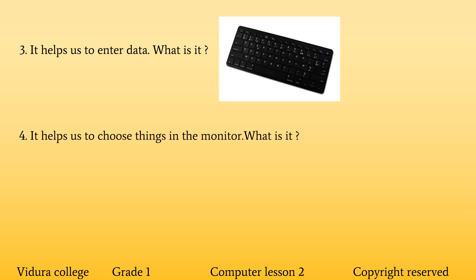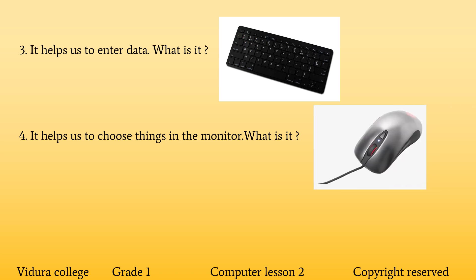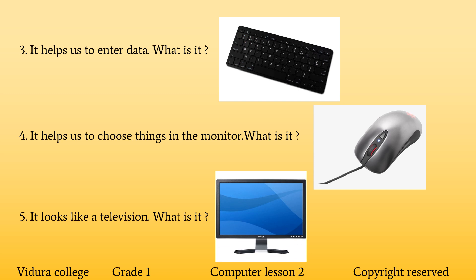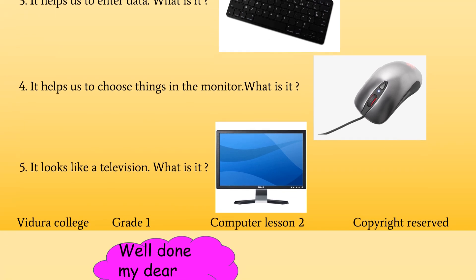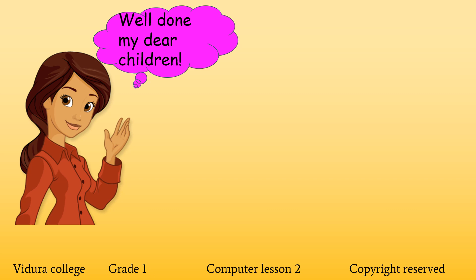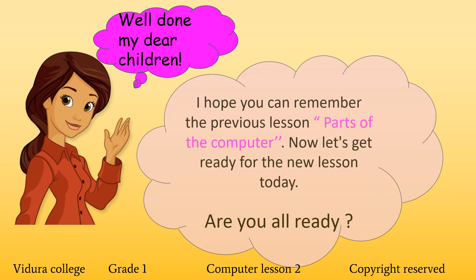Number 4: It helps us to choose things in the monitor. What is it? Mouse. It helps us to click. Number 5: It looks like a television. What is it? Monitor. The monitor has a screen like the television. Very good, well done, my dear children. I hope you can remember the previous lesson now.